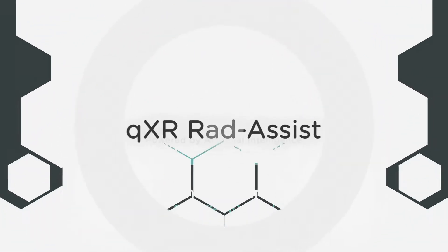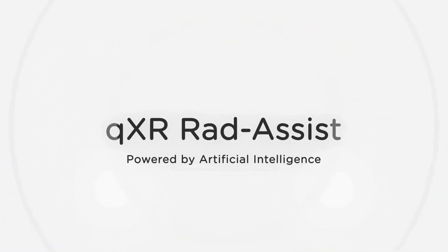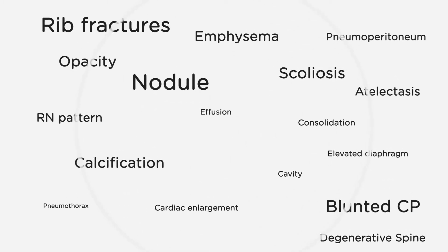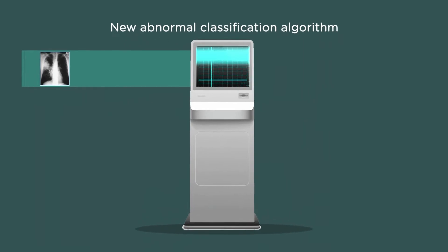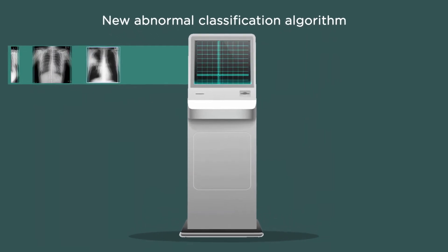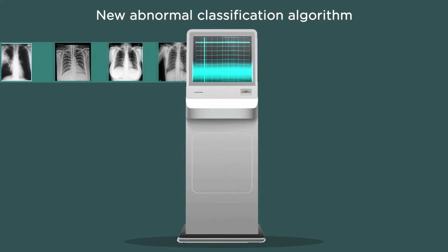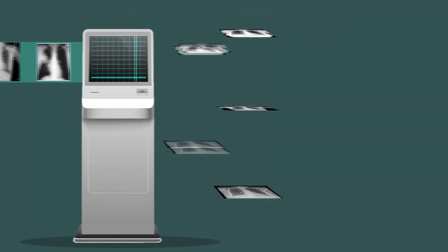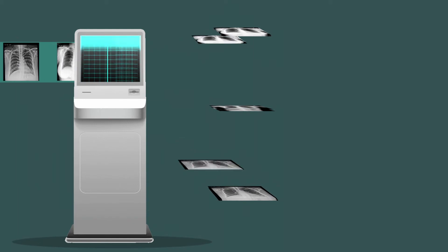This is where QXR RadAssist can aid hospitals and teleradiology practices. With 24 findings detected and a new abnormal classification algorithm, QXR can distinguish between normal and abnormal chest x-rays with a very high degree of accuracy equivalent to expert radiologists.